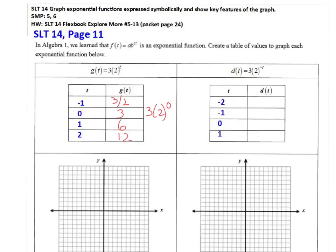Now over here for the d of t, when I plug in negative 2 into the negative t, that really becomes positive 2. When I plug in negative 1, the value becomes positive 1. 0, and then when I plug in 1, that's the negative 1.